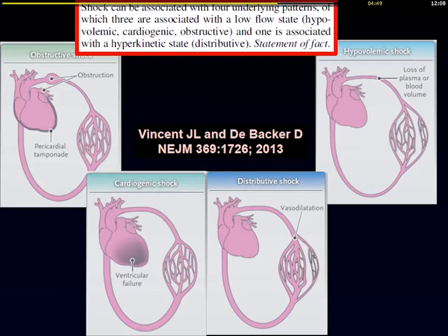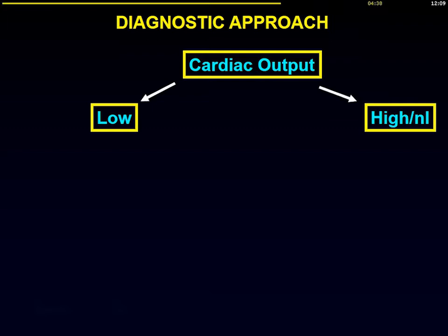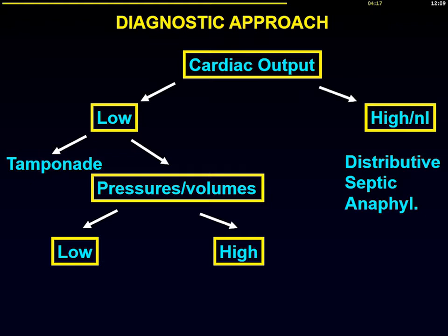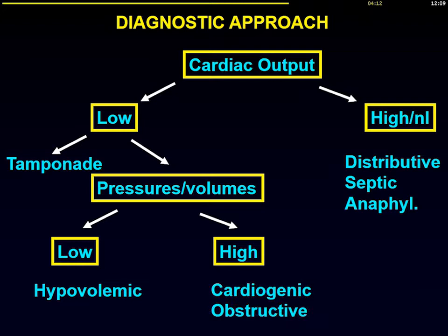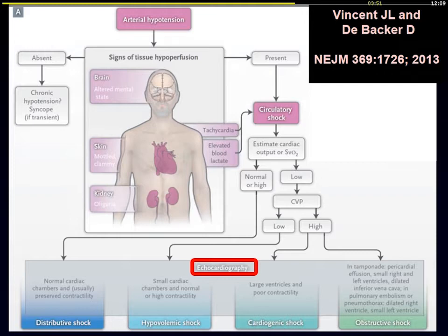Making a diagnosis at the bedside requires starting with cardiac output. If it is high or normal, this indicates distributive shock — for example septic shock. If it is low, the first thing to exclude is tamponade, which is easy to do. Then looking at pressures and volumes: if these are low, it indicates hypovolemic shock; if high, it indicates cardiogenic shock or obstructive shock such as pulmonary embolism. For this reason, we recommend using echocardiography as the first tool to assess shock, as it allows rapid diagnosis by identifying different patterns.